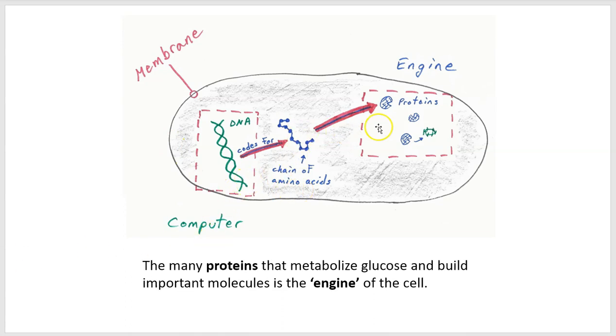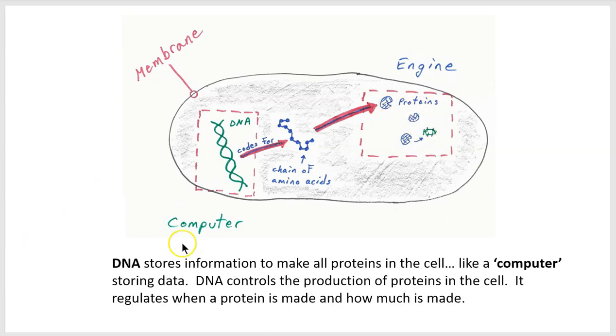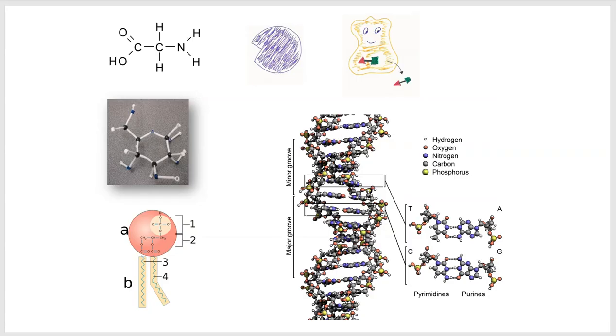The proteins that are doing all those chemical reactions like metabolizing glucose and building important molecules are kind of like the metabolic engine of the car. And then the computer in the car is like the DNA. So DNA has the recipes to build all of those important proteins. And DNA will control when a protein gets made, how much of the protein is made, etc.